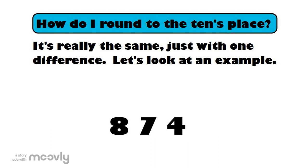Let's also look at how to round to the tens place. It's really quite the same, just with one difference. Let's look at an example. The example is 874. The difference here is we're going to look for the tens place. In this case, it's the seven. So, let's put a box around the seven just like we did before.